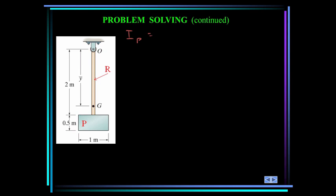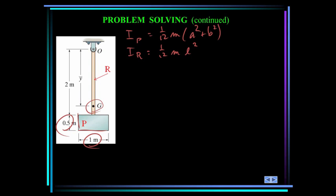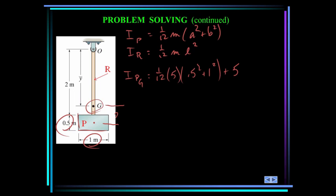From the inside back cover of the book, the moment of inertia of the plate about its center is one-twelfth times mass times (A squared plus B squared), where A and B are 0.5 and 1 in this case. The moment of inertia of the plate about point G is one-twelfth times 5 times (0.5 squared plus 1 squared), plus the mass of the plate times the distance from its mass center to point G squared: 5 times (2.25 minus y-bar), which is 2.25 minus 1.781 squared. This equals 1.621 kilogram meter squared.